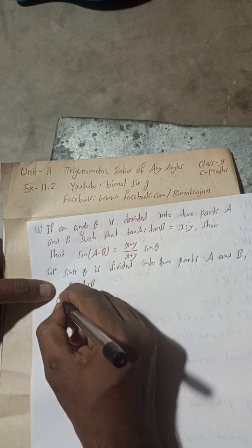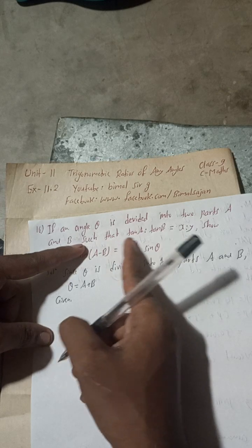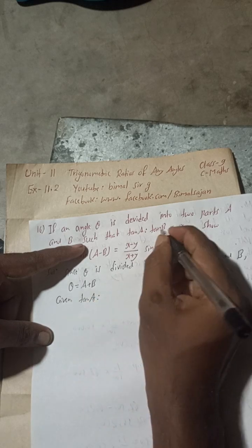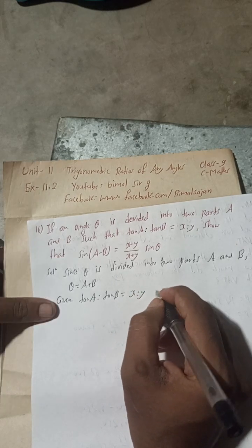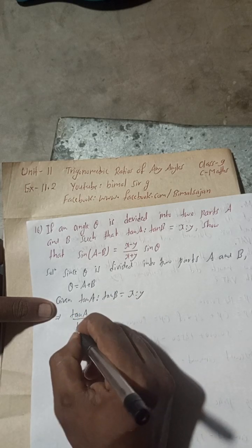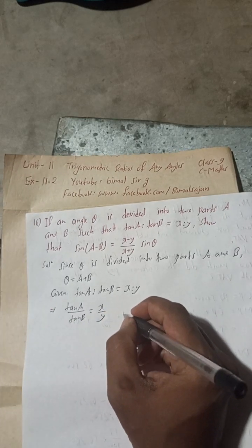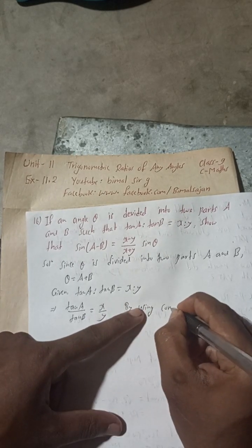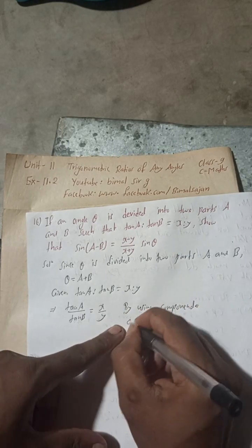Now, given here is tan A is to tan B is equal to X is to Y. This can be written as tan A by tan B equals X by Y. Now we will use componendo and dividendo.